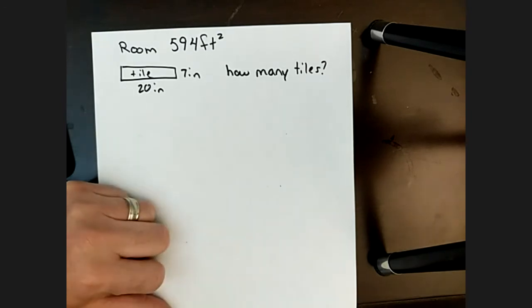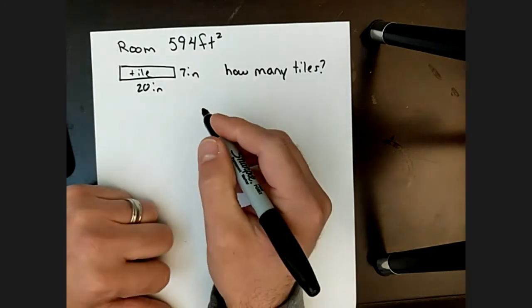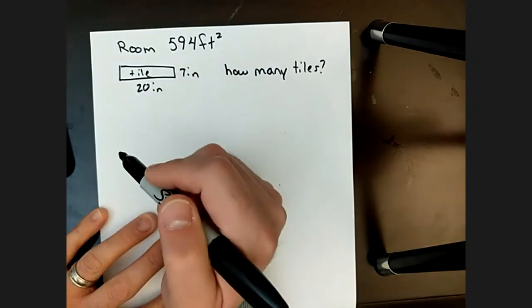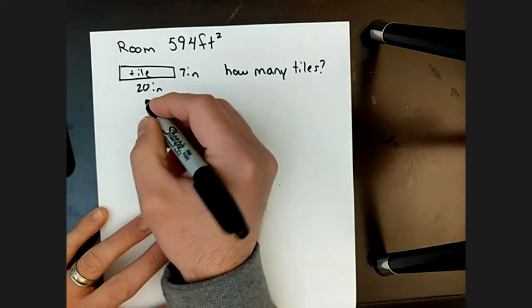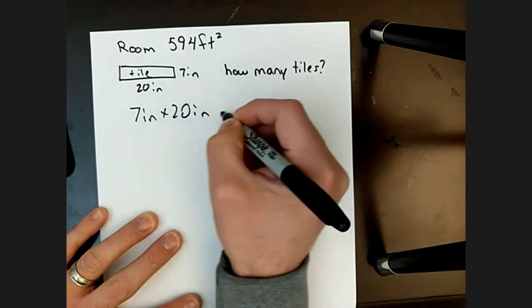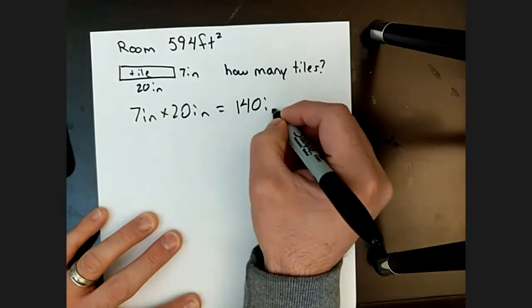So you know, if you're going to go to Home Depot or Lowe's and you're buying tile, you need to know how many tiles are you buying? Is it a box of tiles? How many tiles are in a box? How many boxes do you need to buy? That's obviously going to affect the outcome of your job. So our first thing we want to do is figure out, well, what is the square footage of the tile? So seven inches by 20 inches gives me 140 inches squared.